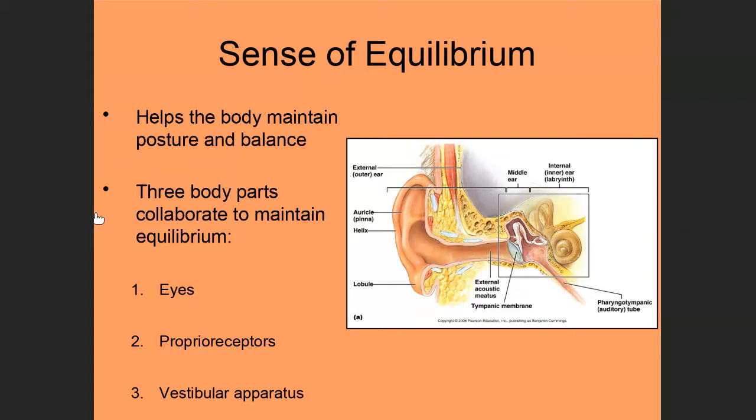But again, equilibrium is our sense of posture, our sense of body position, our sense of balance, basically. There are three body parts that collaborate together to help us to be able to maintain equilibrium or position of the body. So one of these is the eyes, and I want you to think about why this would be.